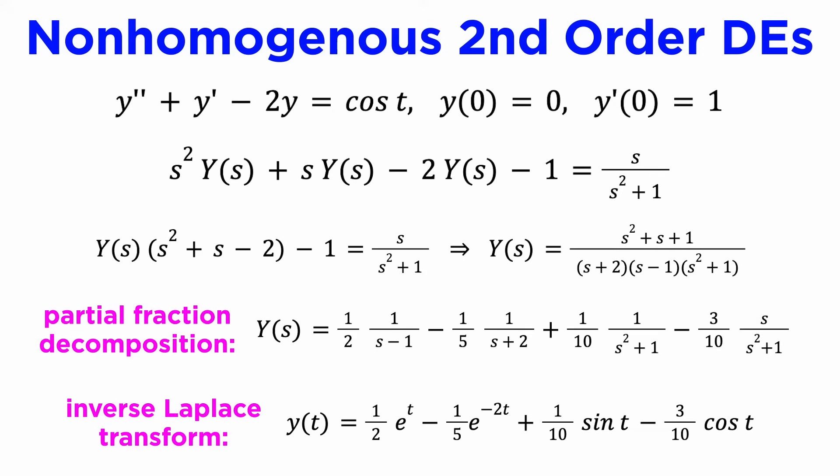which is one half e to the t minus a fifth e to the negative 2t plus a tenth sine t minus three tenths cosine t. Notice that this gave us both the complementary solution and the particular integral and the unknown coefficients, all in one go, so it should be clear that the Laplace transform is a very powerful technique.